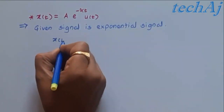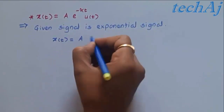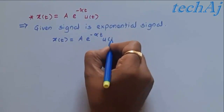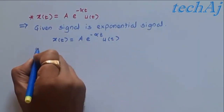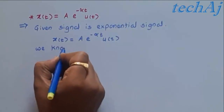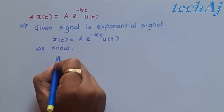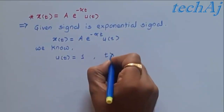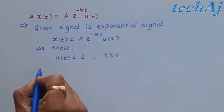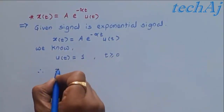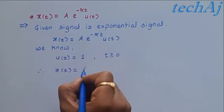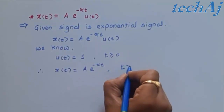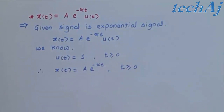We have the signal x(t) = Ae^(-αt) · u(t). We know that u(t) is equal to 1 for all values of t greater than or equal to 0. If we substitute the value of u(t) into the above equation, x(t) becomes Ae^(-αt) for t greater than or equal to 0.